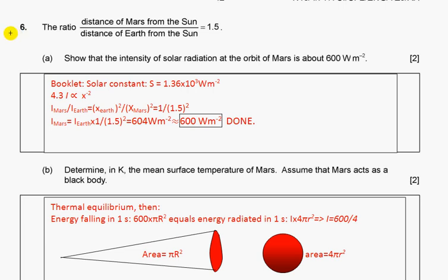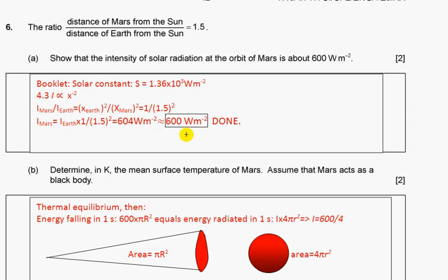Question six: The ratio of distance Mars to sun and Earth to sun is 1.5. Show that the intensity of solar radiation at the orbit of Mars is about 600 watts per square meter. The solar constant is given. As we know, intensity is inversely proportional to distance squared. If we divide intensity Mars by intensity of Earth, we will get the inverse ratio of squares. We rewrite for Mars and we get this value.